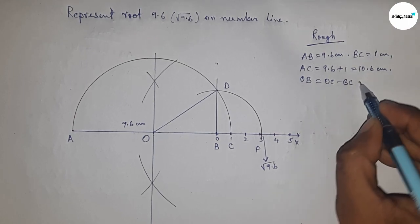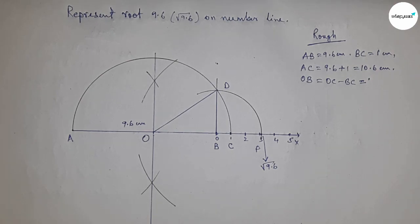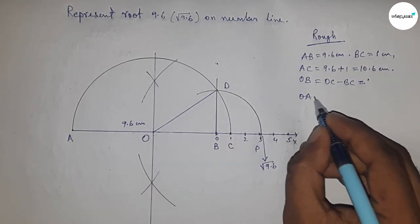The distance OB equals OC minus BC. First, we need to find the radius.